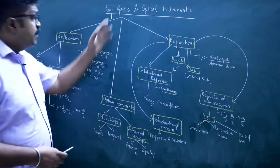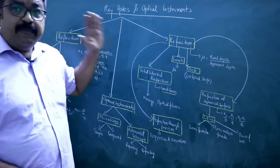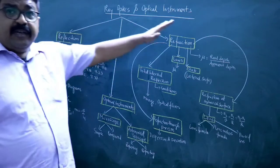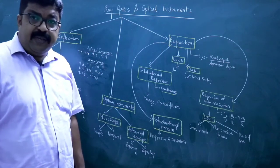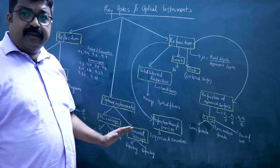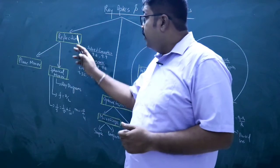This chapter is basically three parts. One part is Reflection, one part is Refraction, and one part is Optical Instruments. Optical Instruments is a separate part.